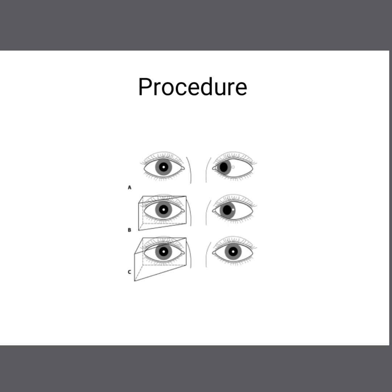In the second figure, as we put the prism, the corneal reflex starts to move towards the pupillary center. And as we keep increasing the amount of prism, the two corneal reflexes become symmetrical.